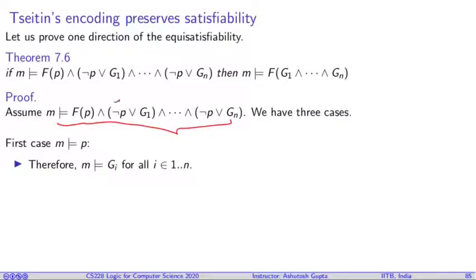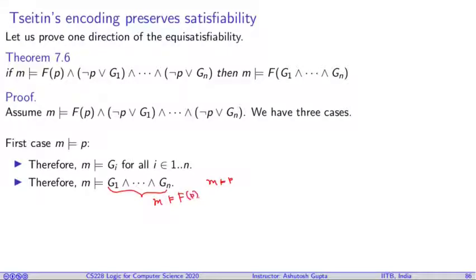Therefore, this literal becomes false. Therefore, Gᵢ must be true. So therefore, G must be true. Therefore, M must satisfy the conjunction of G₁ to Gₙ. And we already have M satisfies P. And we also have M satisfies F(p). So what we can do, we can do the substitution. This formula is satisfied by M. And the truth value of this variable, this expression, and this expression is same under M.